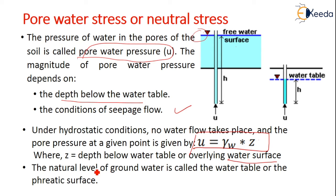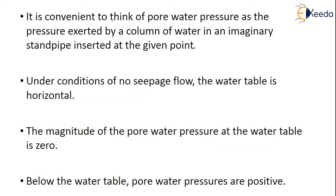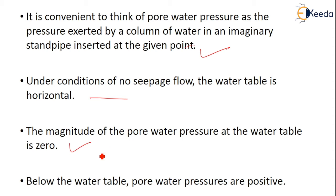The natural level of groundwater is called the water table or the phreatic surface — these are two names for the same thing. It is convenient to think of pore water pressure as the pressure exerted by a column of water in an imaginary standpipe inserted at the given point. Under conditions of no seepage flow, the water table is generally taken as horizontal, and the magnitude of pore water pressure at the water table is taken as zero. Below the water level, pore water pressure is always positive.